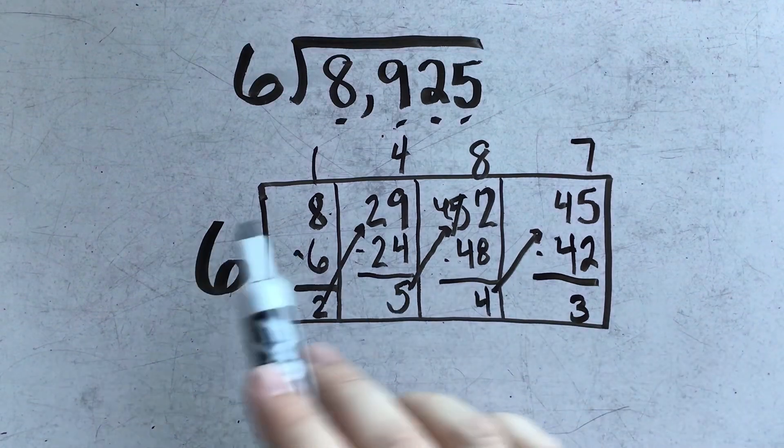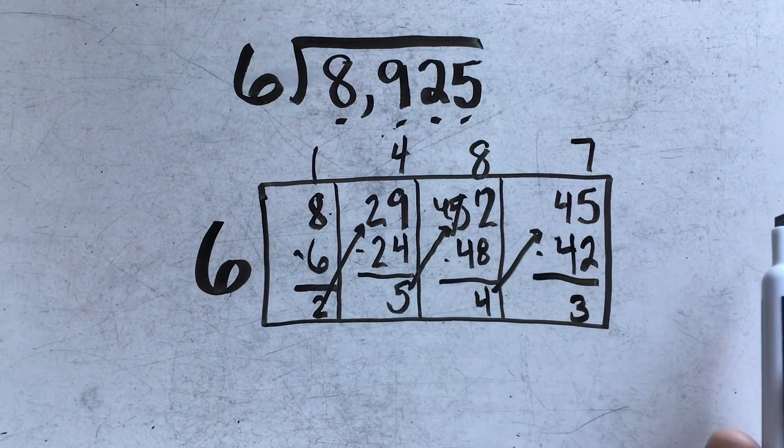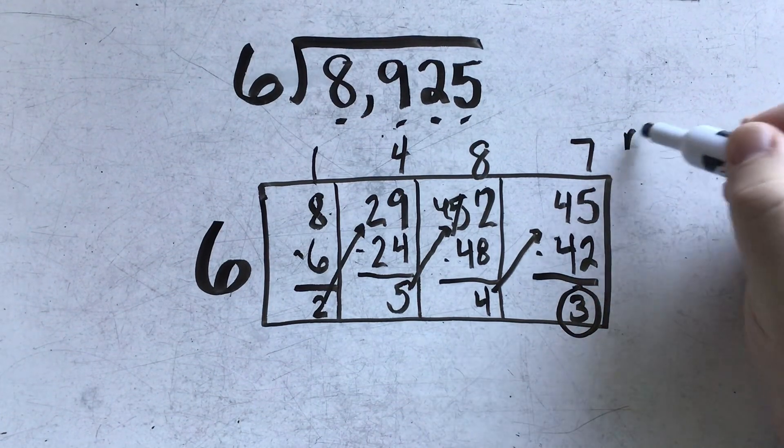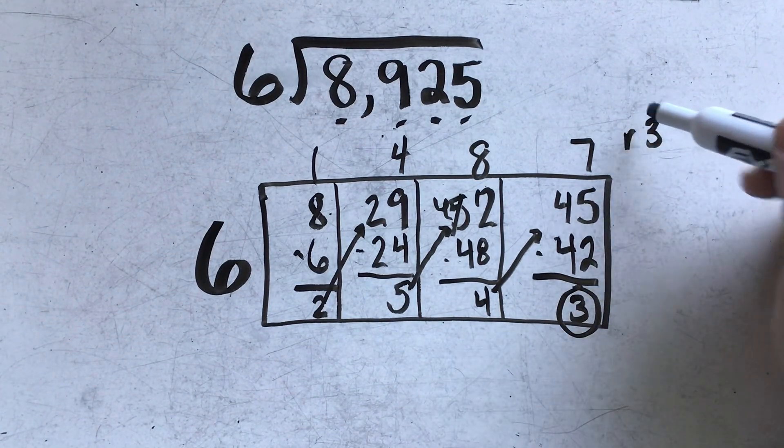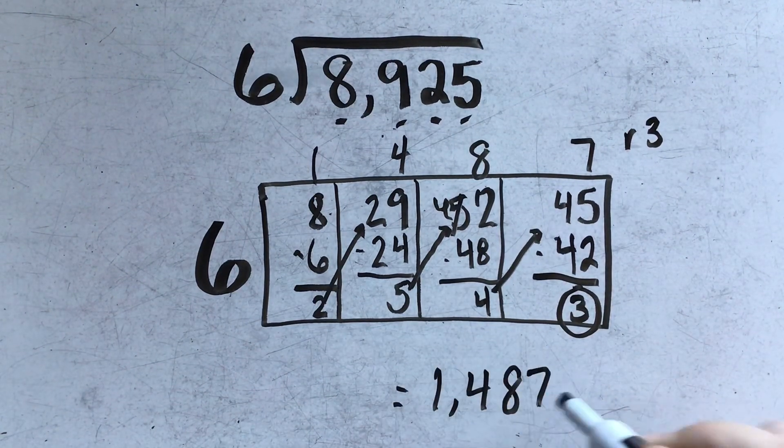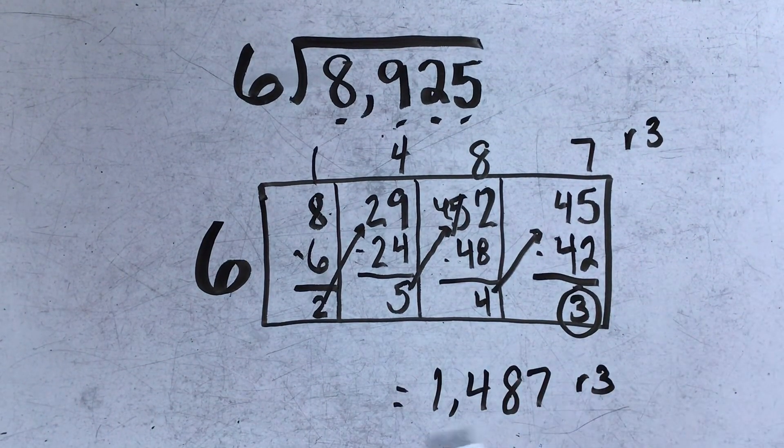Now at this point, if I do not have any more boxes to continue, anything that I have remaining becomes my remainder. And in this case, my answer is 1487, remainder 3.